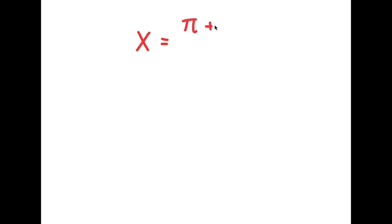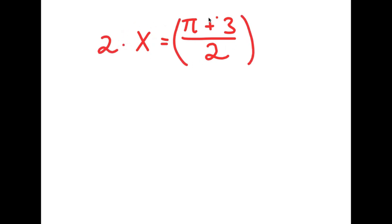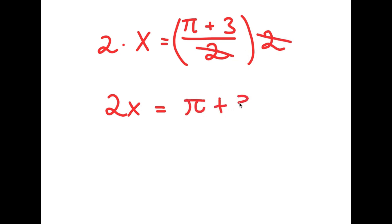So what I'm first going to do is start with the statement: x is equal to pi plus 3 over 2. All I'm doing is giving a value to a variable, which is completely legal. Now I'm going to multiply both sides by 2. So I get 2x is equal to pi plus 3 over 2 times 2. These two twos cancel out, so I get 2x is equal to pi plus 3.